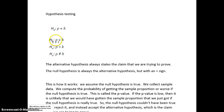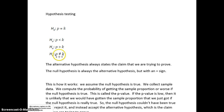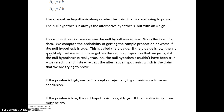We could say that the population proportion is less than a certain number, or greater than a certain number, or not equal to a certain number. The first is called the left-tail test (less than), the second is the right-tail test (greater than), and not equal to is called the two-tail test. The alternative hypothesis always states the claim we're trying to prove.